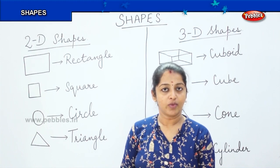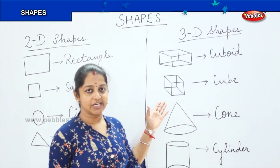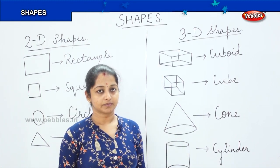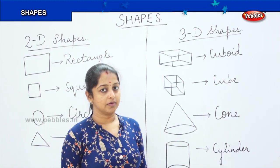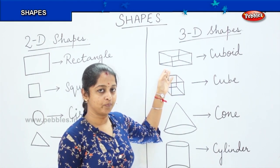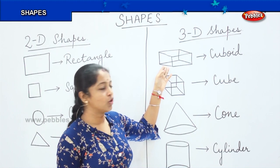Very good. So now we will be moving on to the 3D shapes. Can you see here the shapes drawn on the board? What is this shape called as the first shape? Yes, it is a cuboid.